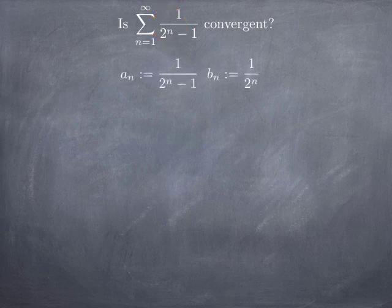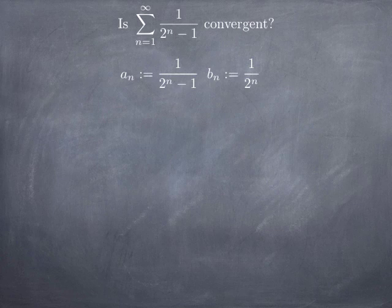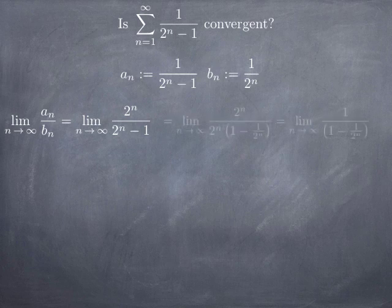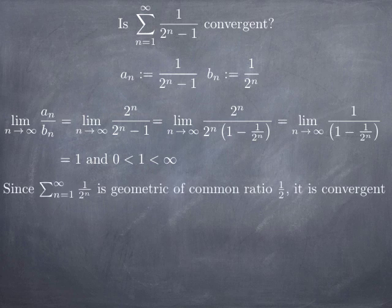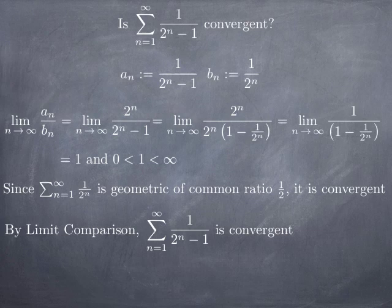If we take a_n = 1/(2^n − 1) and b_n = 1/2^n, these are two series with positive terms. Looking at the limit of the quotient, it is the limit of 2^n over (2^n − 1). Factoring 2^n at the top and the bottom and canceling, we get the limit of 1 over (1 − 1/2^n). Since 1/2^n goes to 0, the limit of the quotient is 1, which is a non-zero positive constant. So the limit comparison test applies, and since the series of b_n = 1/2^n is a geometric series with common ratio 1/2 and therefore convergent, by limit comparison we conclude that the series of a_n is also convergent.